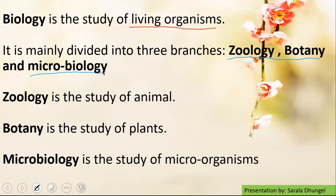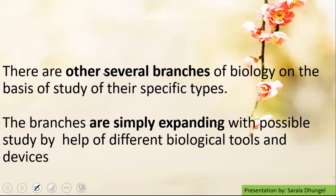Now let's go in brief about all of these branches. Zoology is basically the study of animals, whereas botany is the study of plants. Under microbiology, we study the different kinds of microorganisms. So it doesn't mean that there are only three branches of biology. There are several other branches of biology on the basis of study of their specific sites.